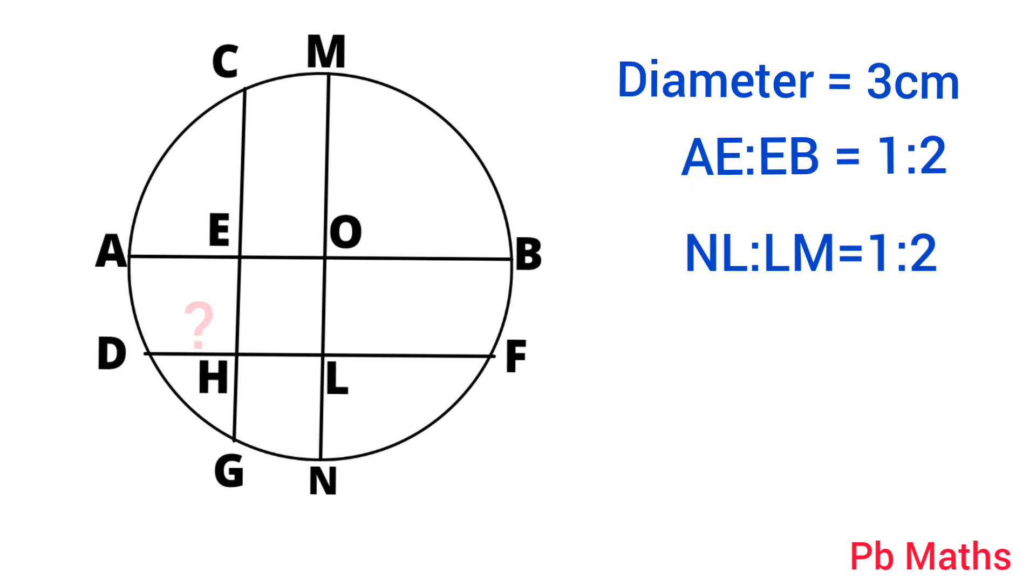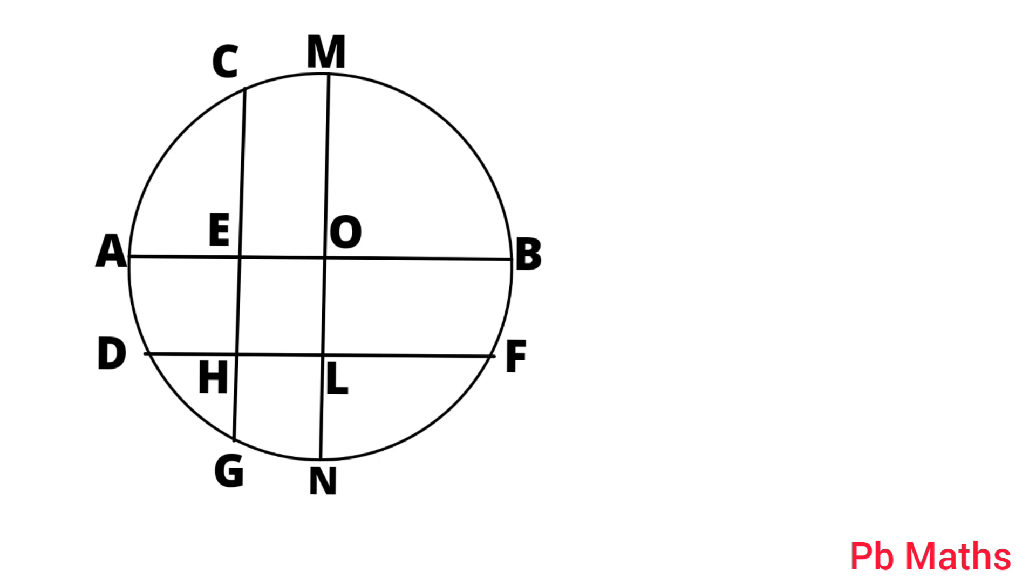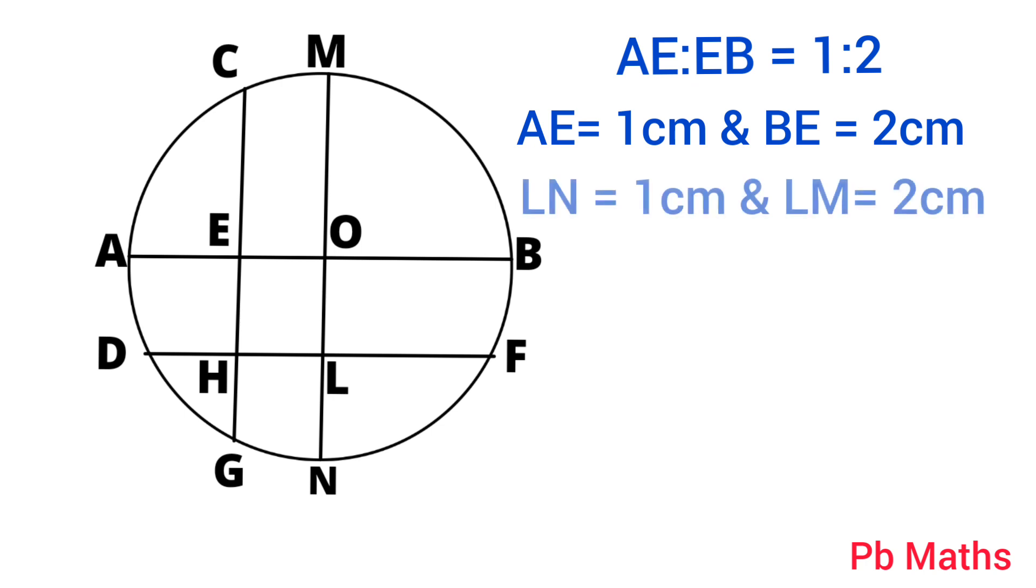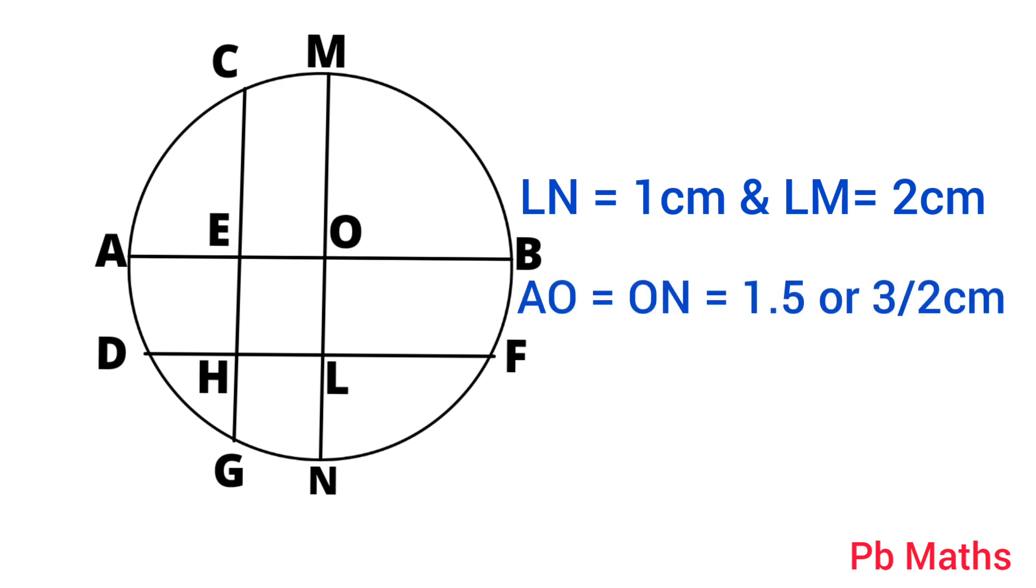To find out, let's first find the length of EO. We know that AE to EB equals 1 to 2. Therefore, AE equals 1 cm and BE equals 2 cm. Similarly, LN equals 1 cm and LM equals 2 cm. Then, AO equals ON equals 1.5 cm, which are the radii of the circle.